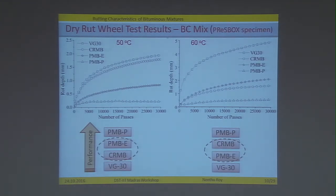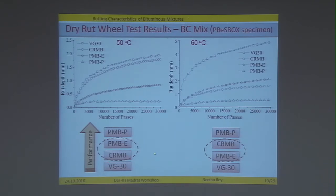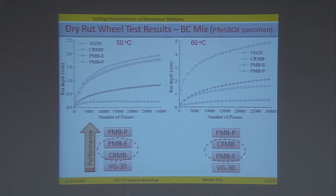Looking at the dry wheel test results for the BC mix, plotting rut depth versus number of passes for 30,000 passes: the least performing binder was VG30 with maximum deformation, then crumb rubber modified binder, then PMB elastomer, and then PMB plastomer. The plastomer polymer modified binder was performing the best. At 60°C, the plastomer again outperformed every other binder, while CRMB and PMB elastomer swapped performance — CRMB performed better than the elastomer modified binder — and VG30 was the least performing one.